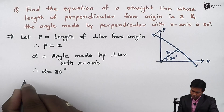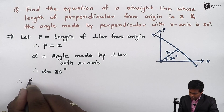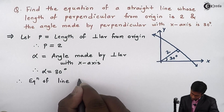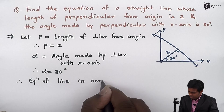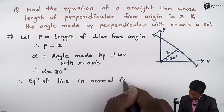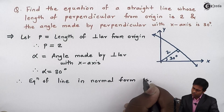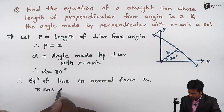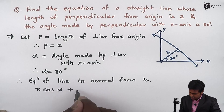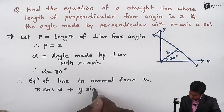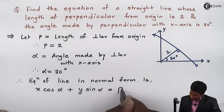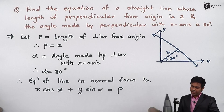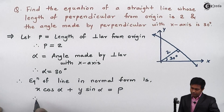We will find out the equation of the line in normal form using the formula: x·cos α + y·sin α = p. This is the formula to find the equation of a line in normal form.